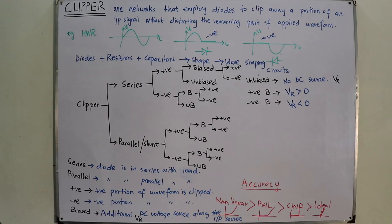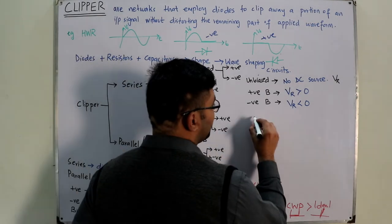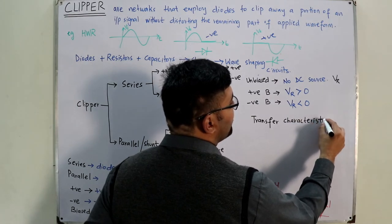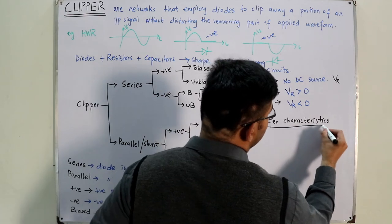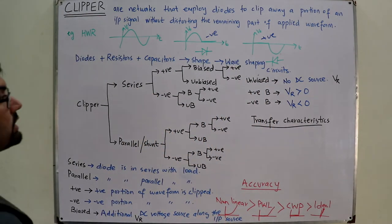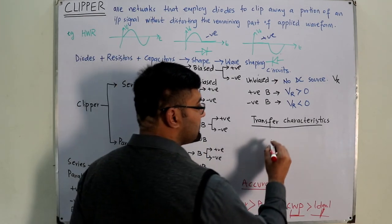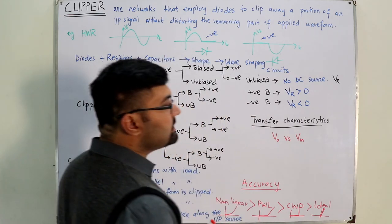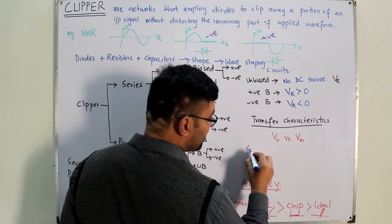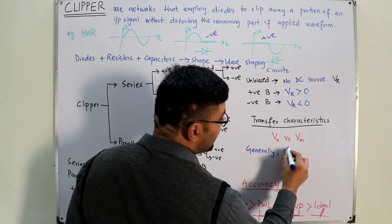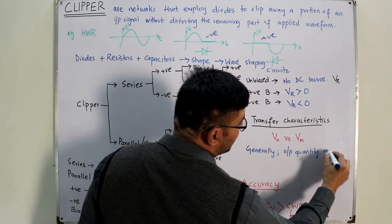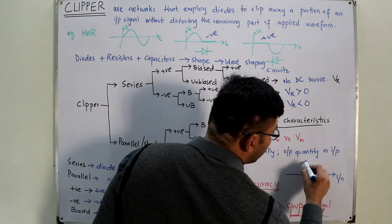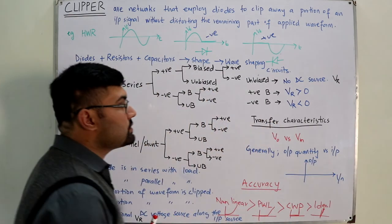Another important point is transfer characteristics. You may have heard the term somewhere. Transfer characteristics is the relation or the characteristics between the output and the input. In this case we are interested in voltage levels — so it is the output voltage versus the input voltage graph. More generally, it is any output quantity versus input quantity graph, where the horizontal axis is the input quantity and the vertical axis is the output quantity.